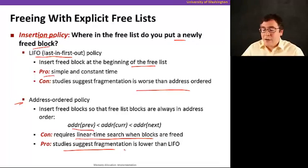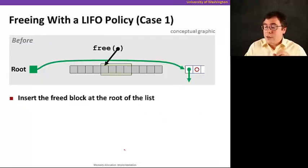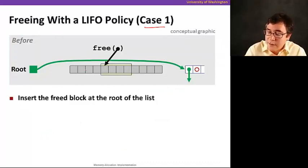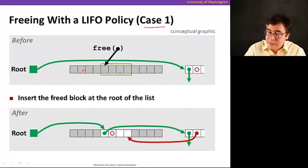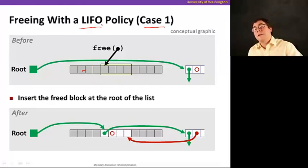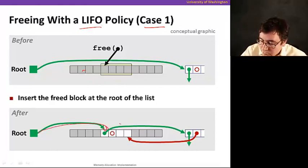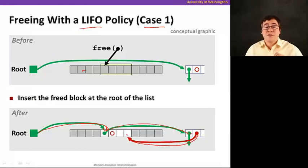Let's see how the LIFO policy works. The first case is when we have a free block in the middle of something allocated. Since we're doing LIFO, the freed block gets inserted at the beginning of the list. The root now points to this new free block, and we update the pointers accordingly — the old first block now points back to the one that was just inserted.